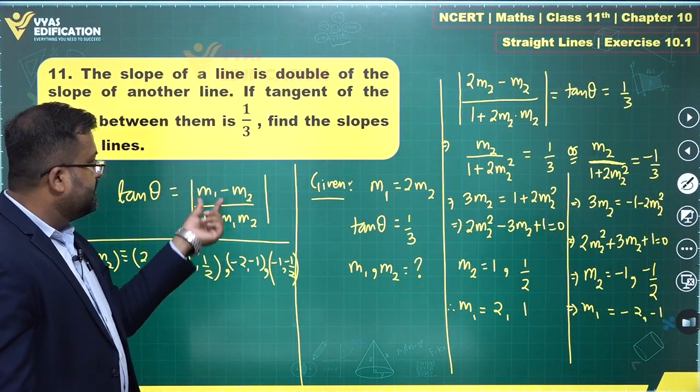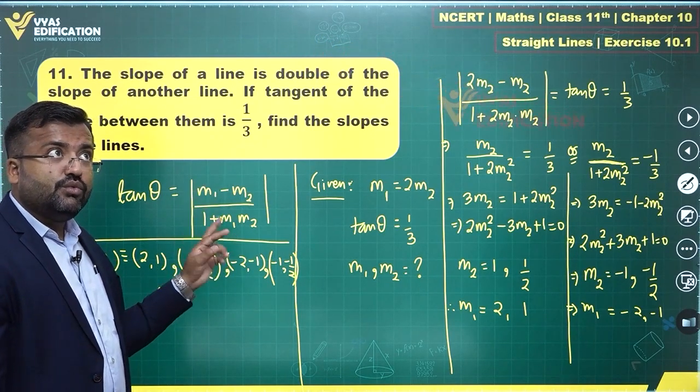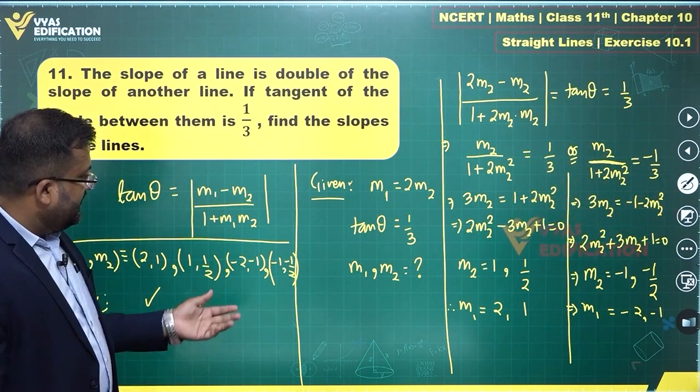Let's check for 1 and 1 by 2. This becomes 1 minus 1 by 2 which is 1 by 2. And this becomes 1 plus 1 by 2 which is 3 by 2. 1 by 2 upon 3 by 2 is once again 1 by 3. This seems okay.